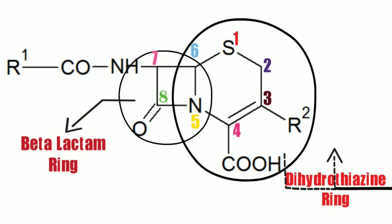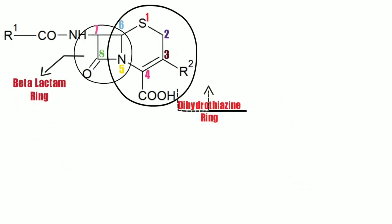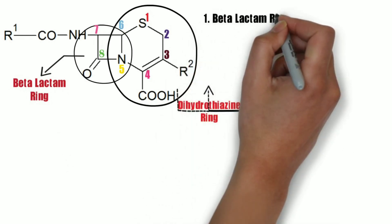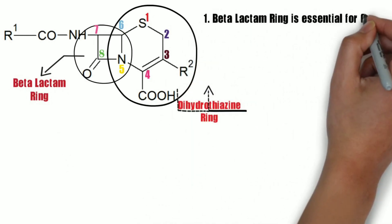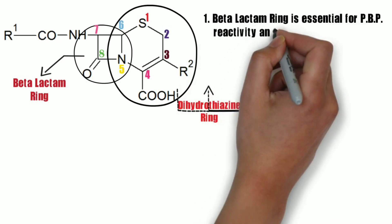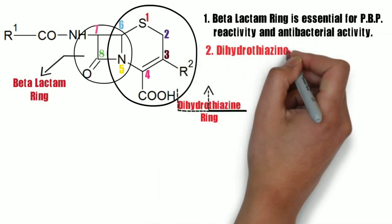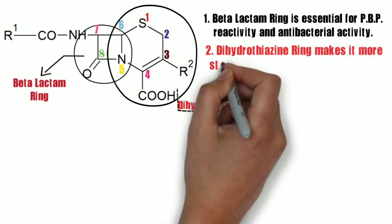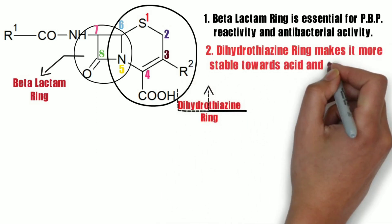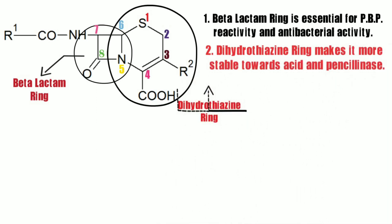Now let's check the points of modification and their effect on the activity, starting with the significance of these two rings. The beta-lactam ring is essential for PBP reactivity as well as antibacterial activity. The dihydrothiazine ring makes it more stable toward acids and penicillinase — the enzyme responsible for the degradation of cephalosporins — thereby preventing that degradation.